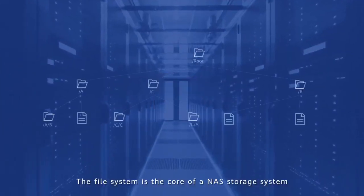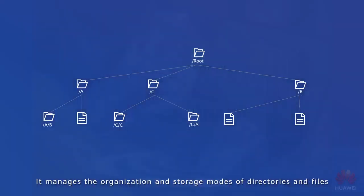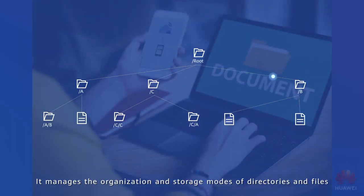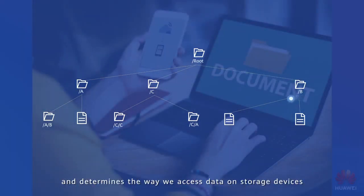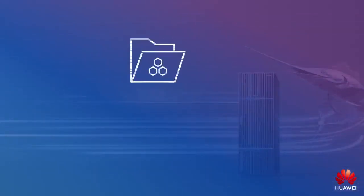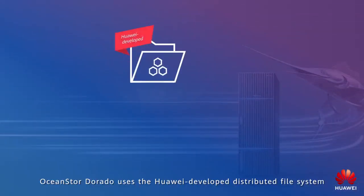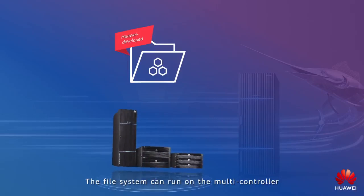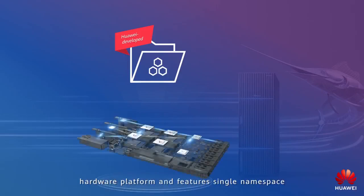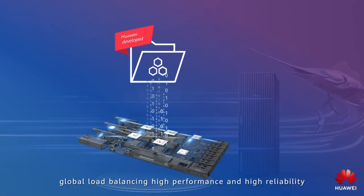The file system is the core of a NAS storage system. It manages the organization and storage modes of directories and files, and determines the way we access data on storage devices. OceanStore Dorado uses a Huawei-developed distributed file system. The file system can run on the multi-controller hardware platform and features single namespace, global load balancing, high performance, and high reliability.